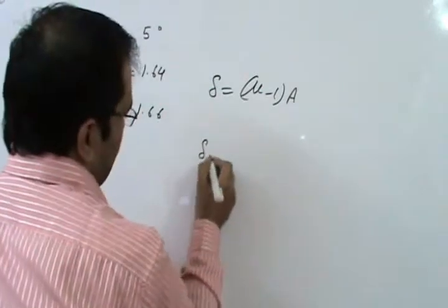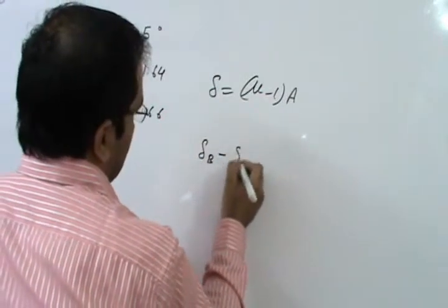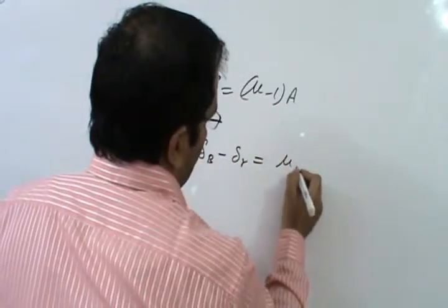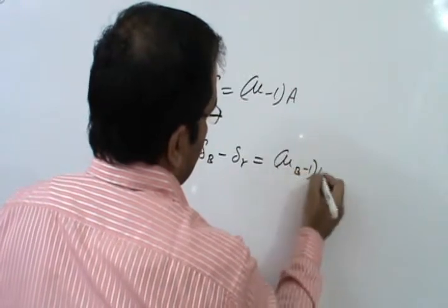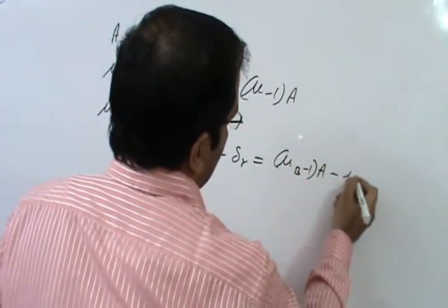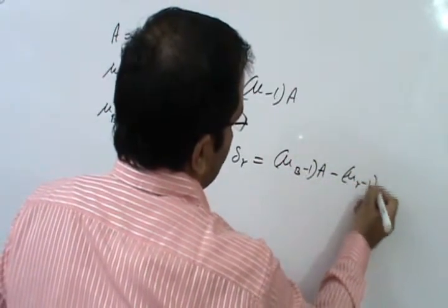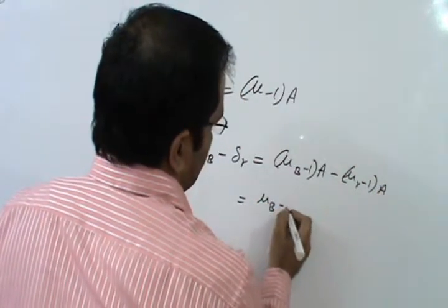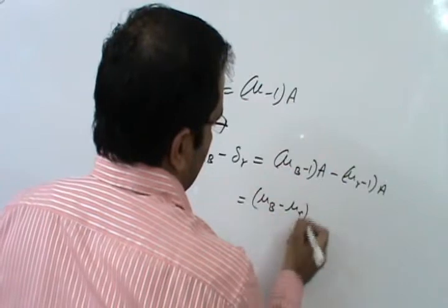So we have delta b minus delta r is equal to mu b minus 1 into a minus mu r minus 1 into a. That is mu b minus mu r into a.